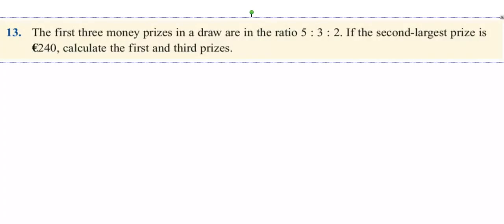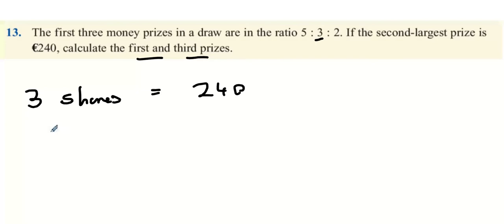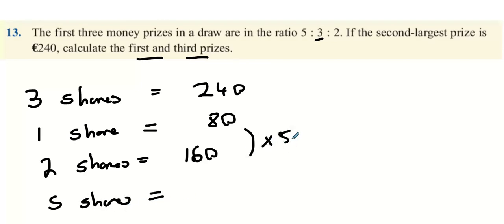Question 13. The first three money prizes in a draw are in the ratio 5 to 3 to 2. If the second largest prize is 240 euro, calculate the first and third prizes. Three shares equals 240 euro, so one share is 80 euro. The third prize is two shares: 2 times 80 is 160 euro. The first prize is five shares: 5 times 80 is 400 euro.